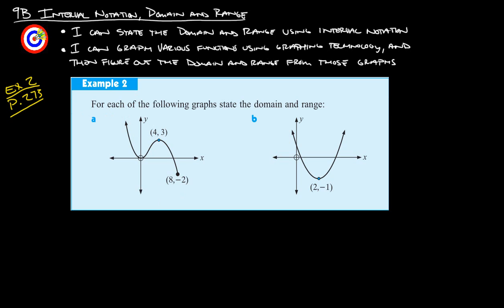On this one here, we would say that the domain is the set of all numbers X such that X, in this case, is going to be 8 or smaller. So X is going to be less than or equal to 8. And that's our domain. Range is going to be, now we're talking about the Y's, so the set of all Y's such that, if you'll notice, the Y starts down at negative 2 and it goes up forever and ever, so Y is going to be greater than or equal to negative 2. And that's the range for that.